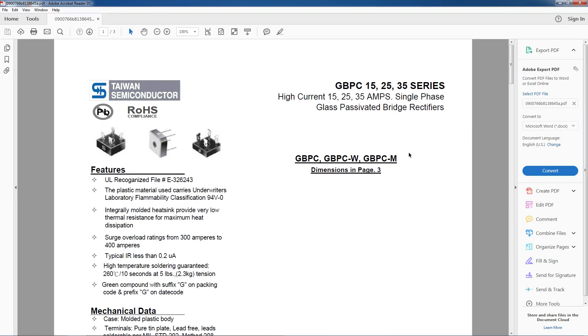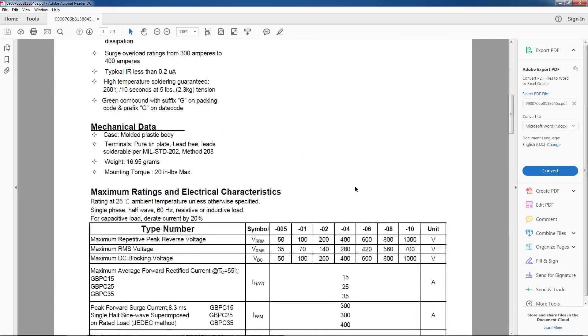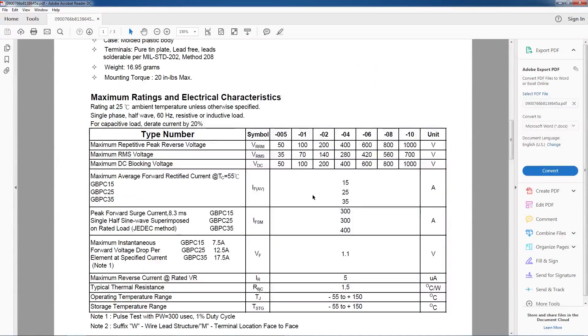So here I have the datasheet for my full bridge rectifier. If we scroll down we're going to take a look at the maximum reverse voltage, maximum average forward current and forward voltage drop. And this is all the symbols for them: VRRM, IF and also VF.